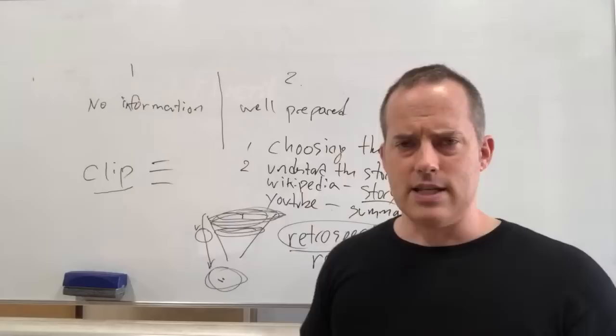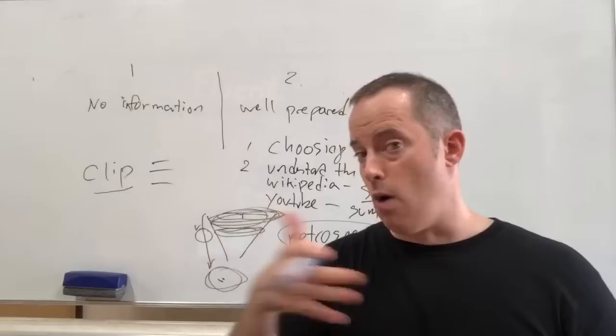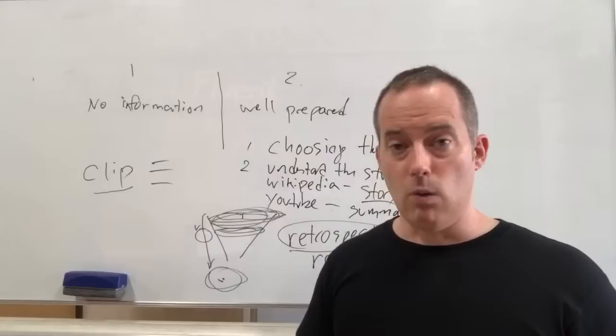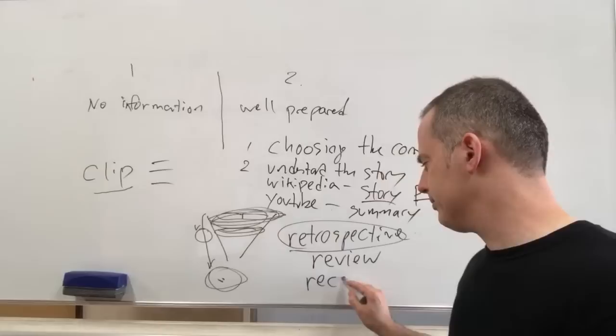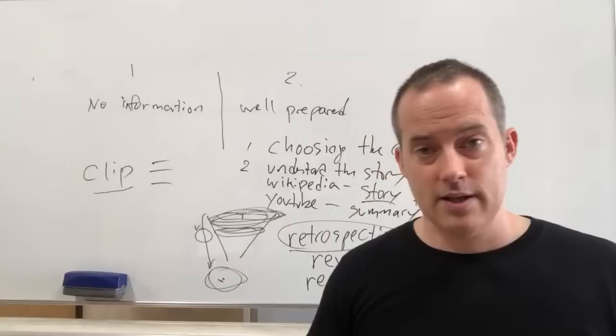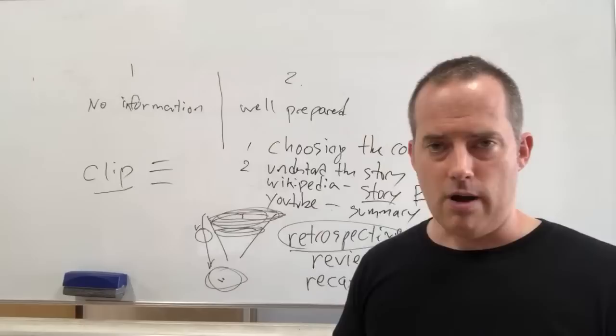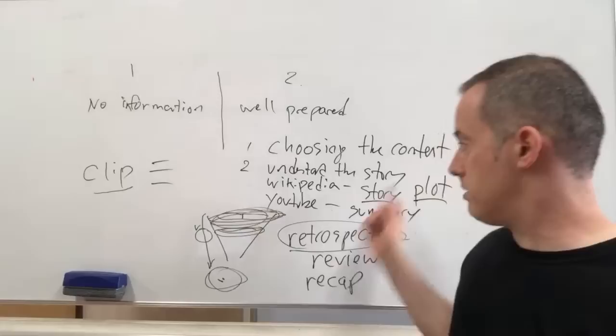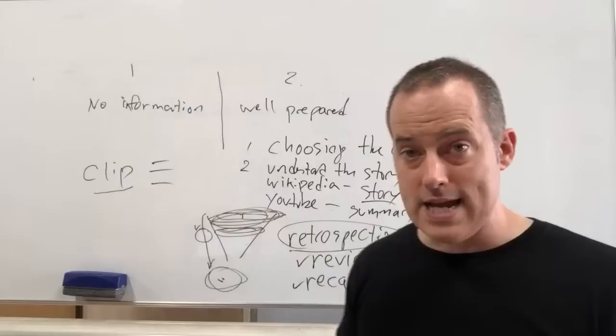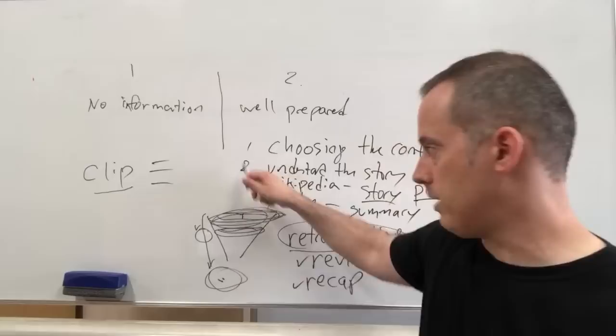Another word to search for is a 'recap.' I was looking for a recap of Yellowstone because I hadn't seen the new season. A recap means 'tell me what happened.' You can use this when searching for something, or when talking to a friend: if he tells you about a camping trip, he's giving you a recap — a summary of what happened. So 'review,' 'recap,' 'synopsis' — these are all different words you can use to find more information about the story.